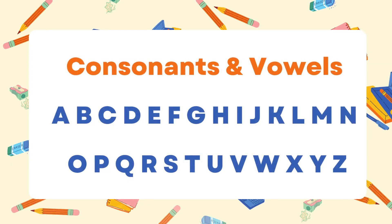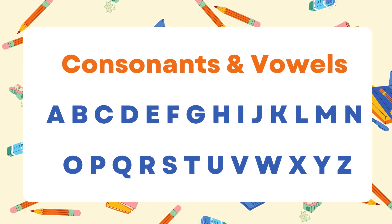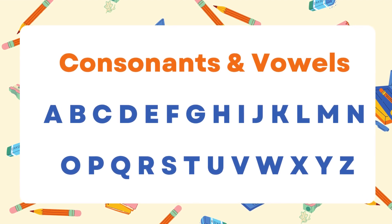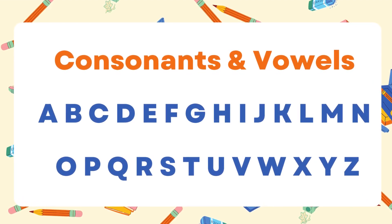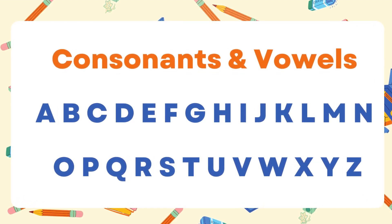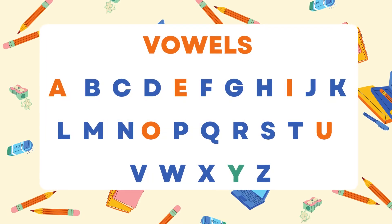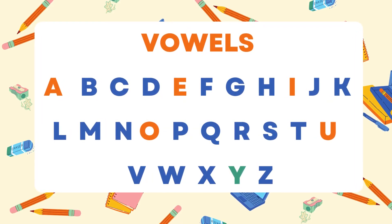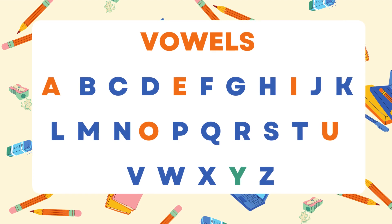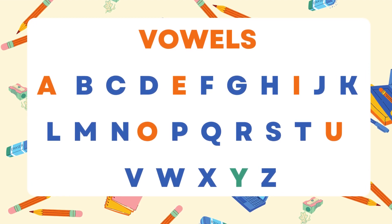The alphabets consist of consonants and vowels. There are 21 consonants and 5 vowels. A, E, I, O, and U are the 5 vowels in English. Y is sometimes a vowel or a consonant.